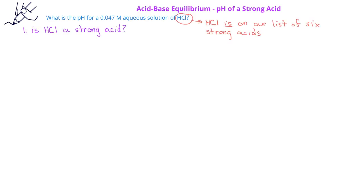Since HCl is a strong acid, we know that the initial concentration of the HCl will be equal to the equilibrium concentration of the hydronium ion, and these will have a value of 0.047 molar.